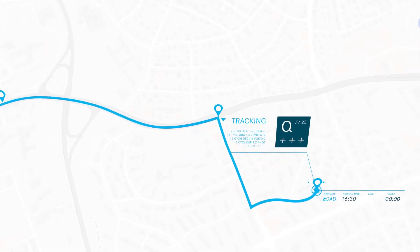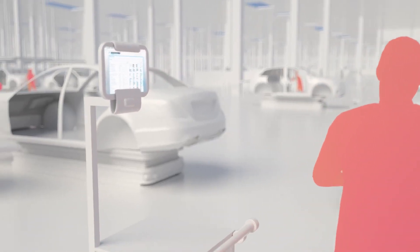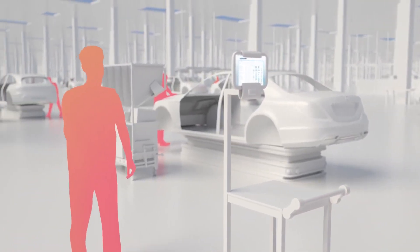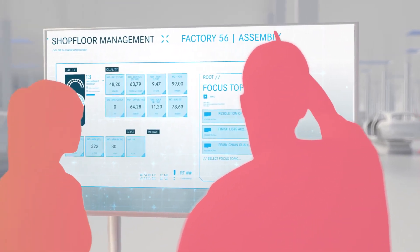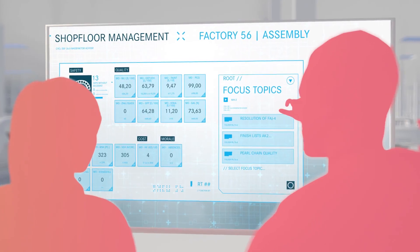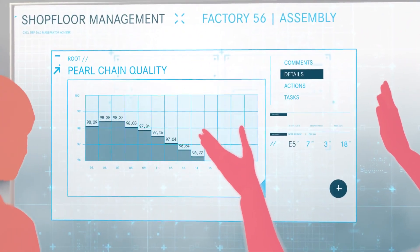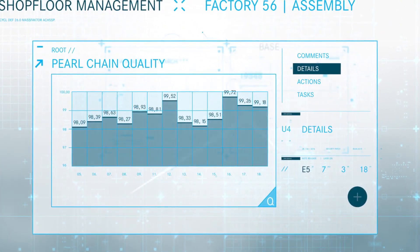Factory 56 is paperless. All relevant data is provided to our workers on smart devices at precisely the right time and place. Transparency and speed through analysis and visualization of relevant production data in real time. Digital shop floor management as a tool for our managers in production.